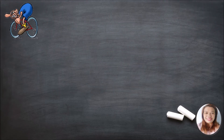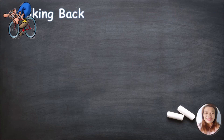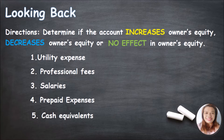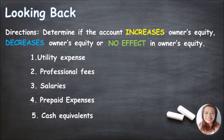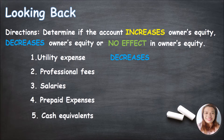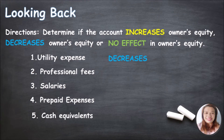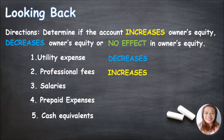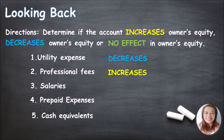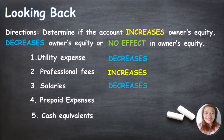Looking back to your lessons, let us check how much you remembered from our last topic. Determine if the account increases, decreases, or has no effect on owner's equity. Number one: utility expense — the answer is decreases owner's equity. Number two: professional fees — the answer is increases owner's equity. Number three: salaries — the answer is decreases owner's equity.